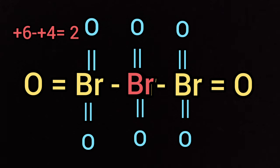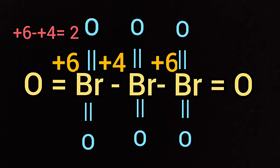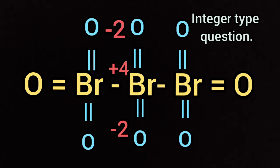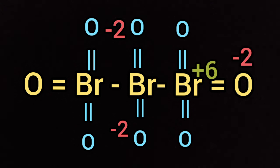The oxidation numbers for the bromine atoms are plus 6, plus 4, and plus 6. So the difference in oxidation number of two types of bromine atoms in Br3O8 is two. It can be set as an integer type question.